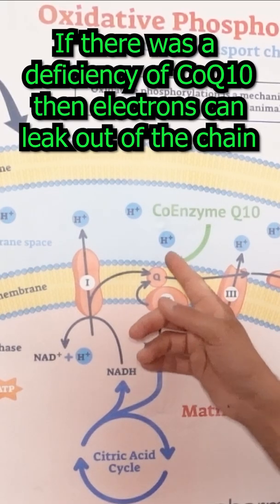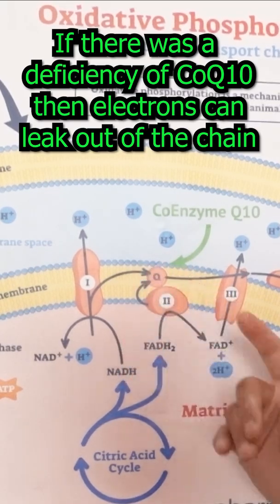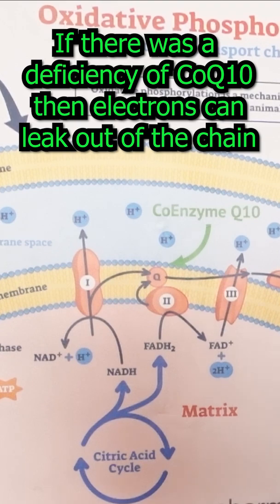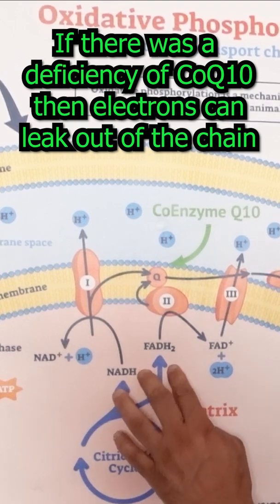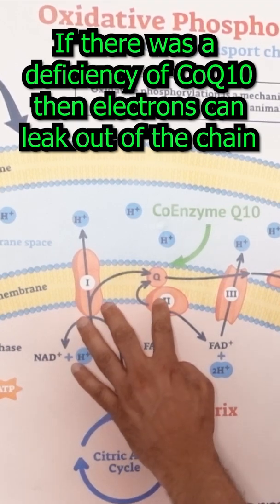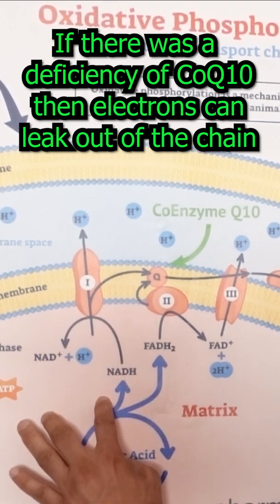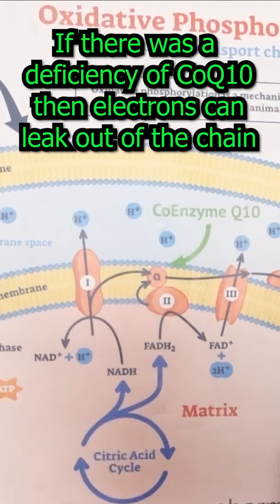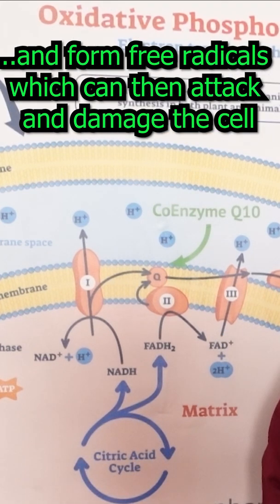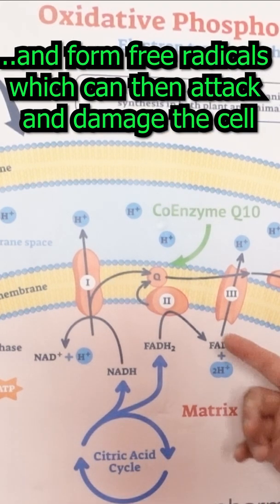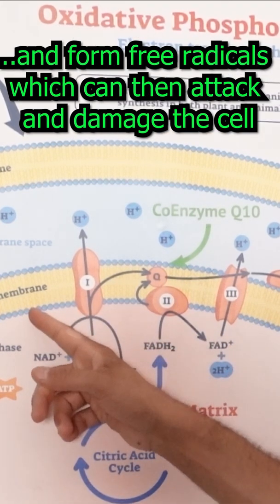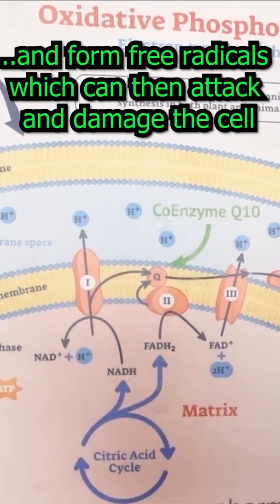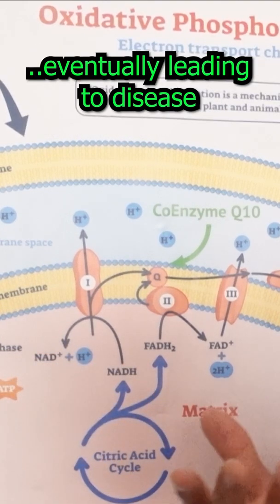If there was a deficiency of coenzyme Q10, then electrons will build up in these complexes and eventually leak out, where they will prematurely combine with oxygen to form free radicals, which can then damage these membranes and these cells. This can eventually lead to disease.